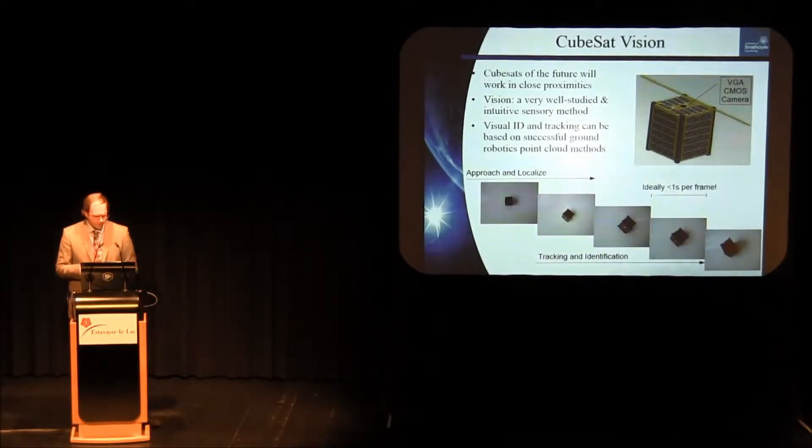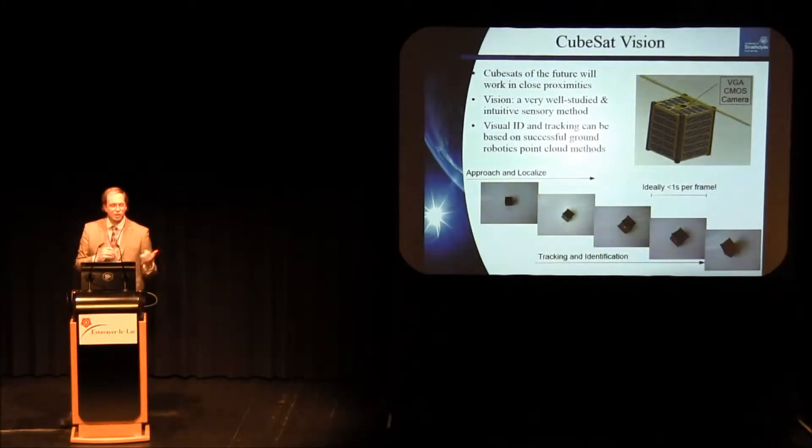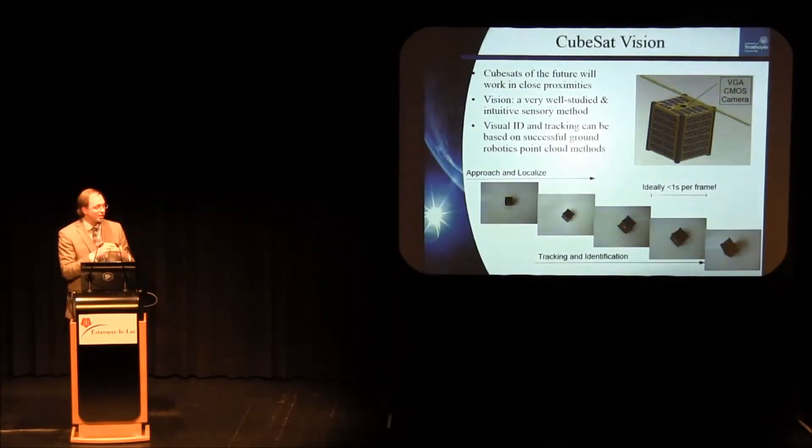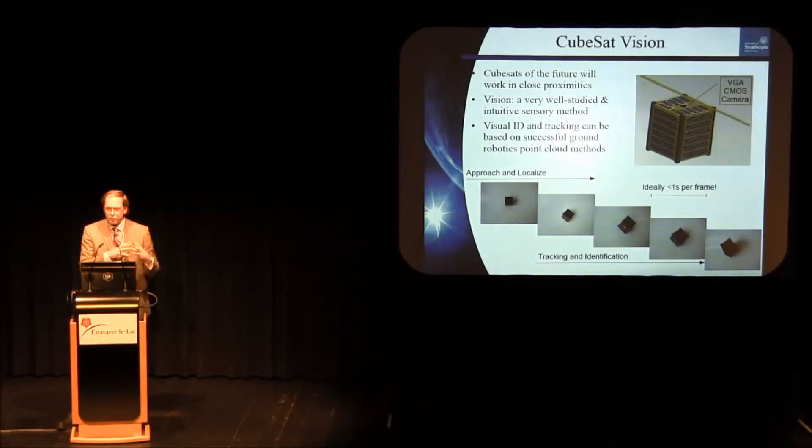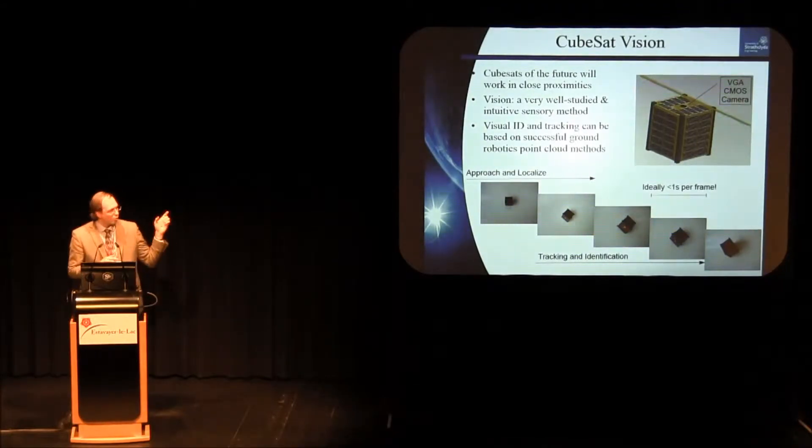So I would foresee that we would have a set of stages. If you want a CubeSat to approach another CubeSat, like the one in the picture, we've got a VGA CMOS camera on it, and we would approach, identify that there's something there. We would get a better idea of it as we take several pictures in succession, like I have at the bottom. We'd be able to track the object, ultimately identify it, and we'd want to be able to do this fairly quickly because even with low relative velocities, you need at least to take one image per second, or better, preferably.